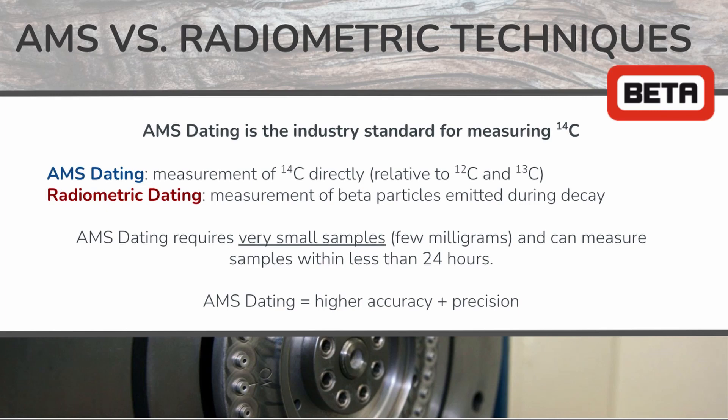In contrast, AMS dating measures the carbon-14 directly relative to carbon-12 and carbon-13 present, rather than measuring the products of its radioactive decay.